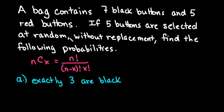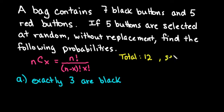For this video, I want to show you how to use the TI-Nspire to find probabilities involving combinations. We have a bag that contains seven black buttons and five red buttons. If five buttons are selected at random without replacement, we need to find the following probabilities. We have a total of 12 buttons and we are selecting five.